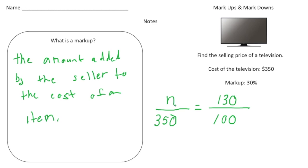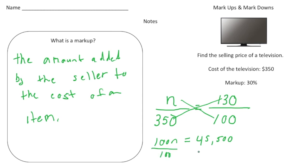The n value will be the actual selling price of the television. Now that we have our proportion, we write our equation: 100n equals 350 times 130, which gives us 45,500. Anytime you have two equal ratios, the cross products are equal. Dividing both sides by 100, n equals $455. So they bought it for $350, the markup was 30%, and the selling price is $455.